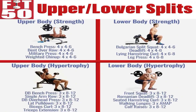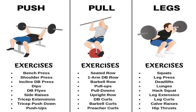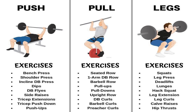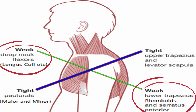Training splits like an upper-lower body allow more exercises per body part, and five or six-day splits like a push-pull-leg allow even more room for variety. It's best to use the extra room you have in these types of training splits to work on weak muscle groups and imbalances.